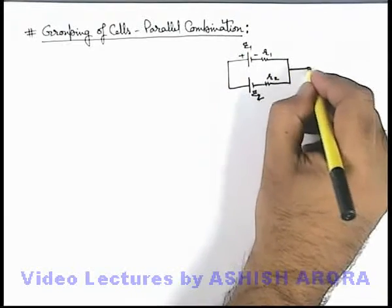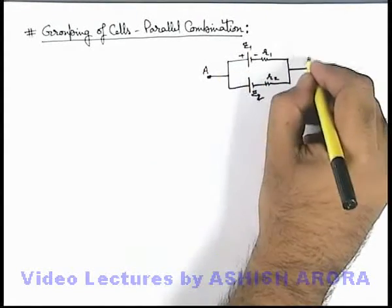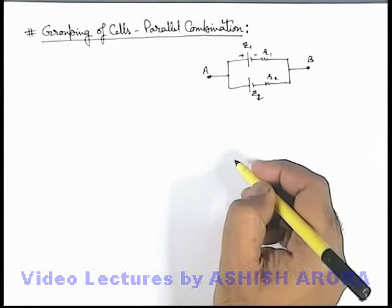Say two cells are having their EMFs e1 and e2, and internal resistance r1 and r2 are connected in parallel fashion, as we can see here in the figure.